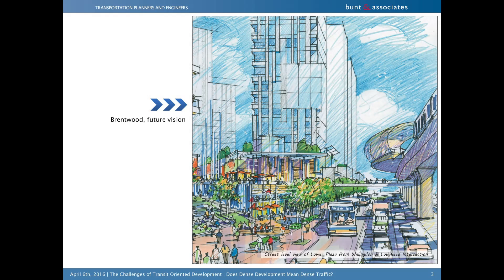This is Brentwood in 1961 - obviously a suburban mall. And now they're developing plans like this, and this thing is now under construction. I'm hoping I can give you some tips, warnings, or strategies on how to help pull these things off, because the main topic of this presentation is the dichotomy of planning objectives and some of the transportation engineering realities of these TOD developments.